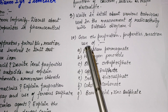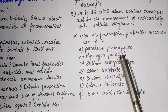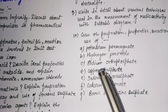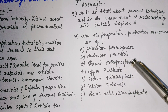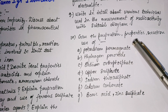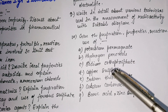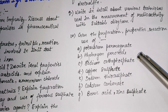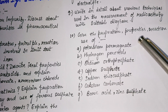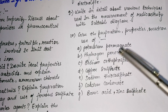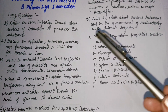The tenth question: give the preparation, properties, reactions, and uses of the following — potassium permanganate, hydrogen peroxide, sodium orthophosphate, copper sulfate, sodium thiosulfate, calcium carbonate, boric acid, and zinc sulfate. For each drug, we need to write: preparation, properties, order, taste, storage, stability, brand name, formulation, chemical name, molecular formula, structure, reaction, and use. These are the most important topics. That completes the total of 10 long questions.